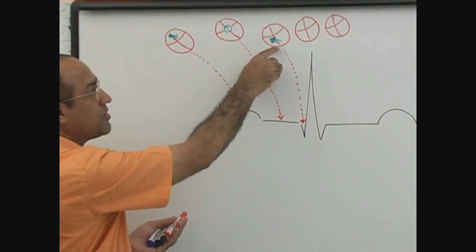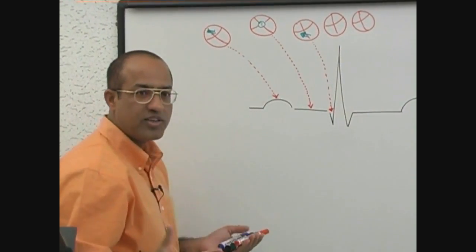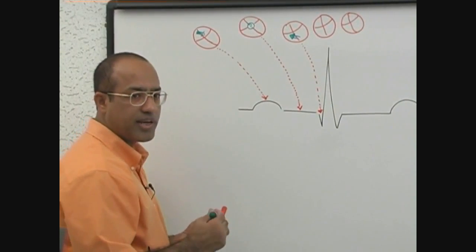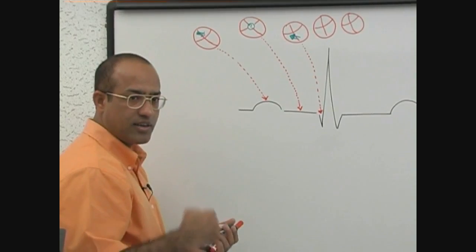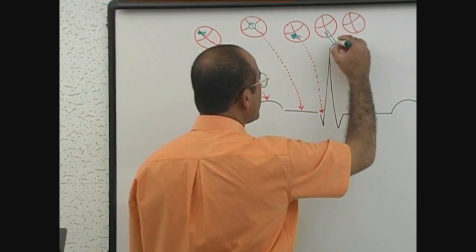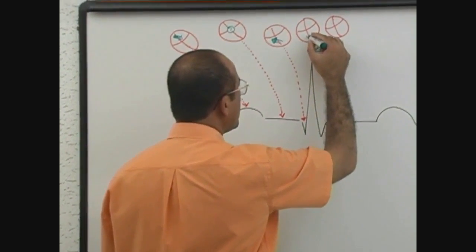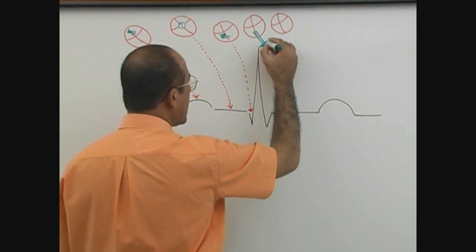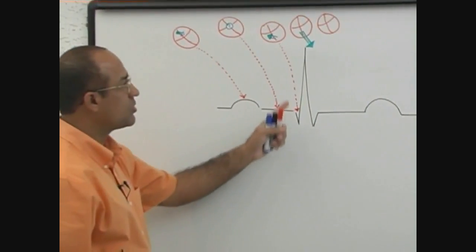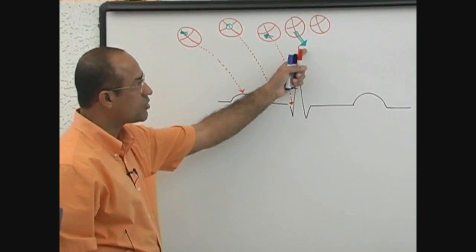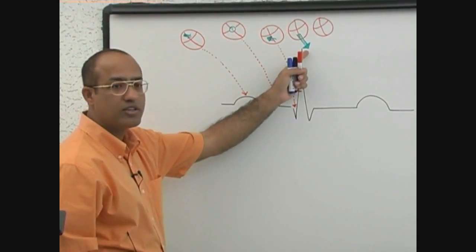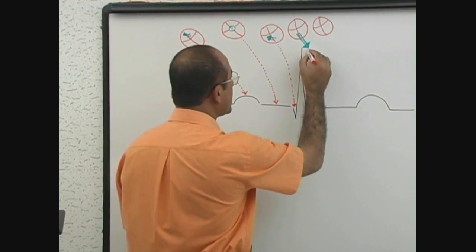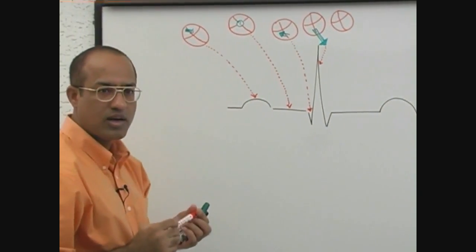Once the ventricular septum is depolarized, the next event is major ventricular depolarization. During major ventricular depolarization, a very powerful electromagnetic vector is made, which is directed downward and leftward. Because it is a strong vector, it makes a very strong wave. Because it is moving towards the positive electrode, there is upward deflection, and because it is a fast vector, there is a sharp wave. This electrical event is responsible for the R wave.